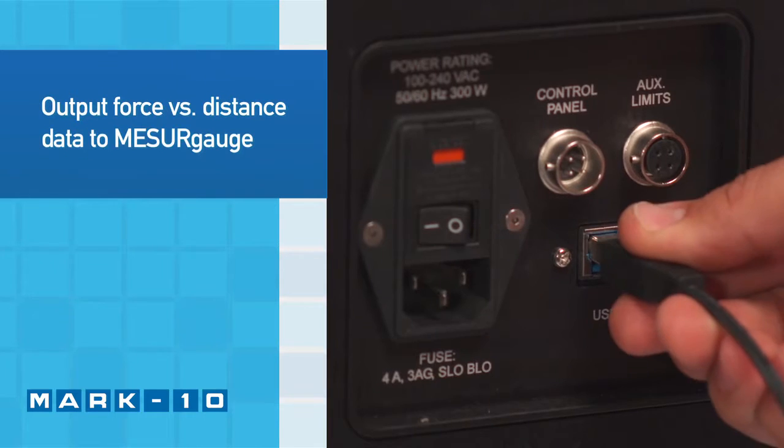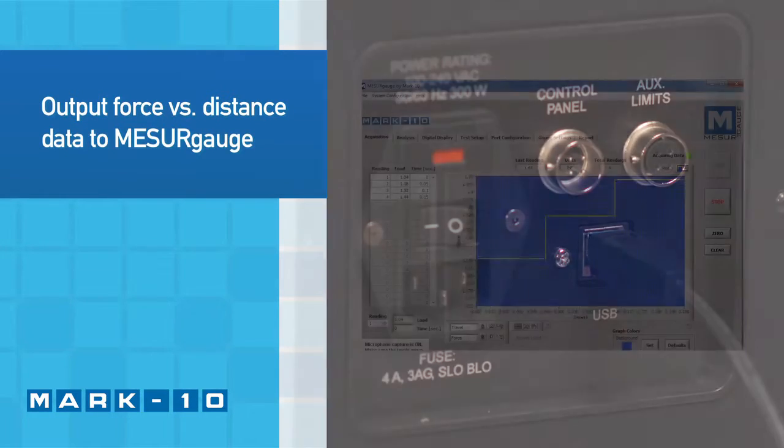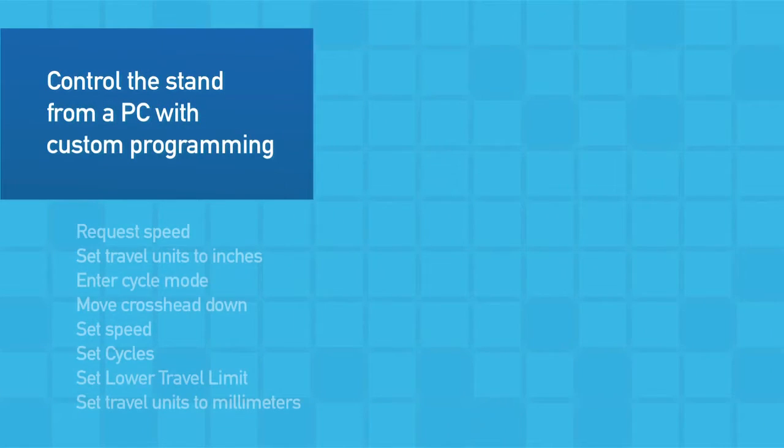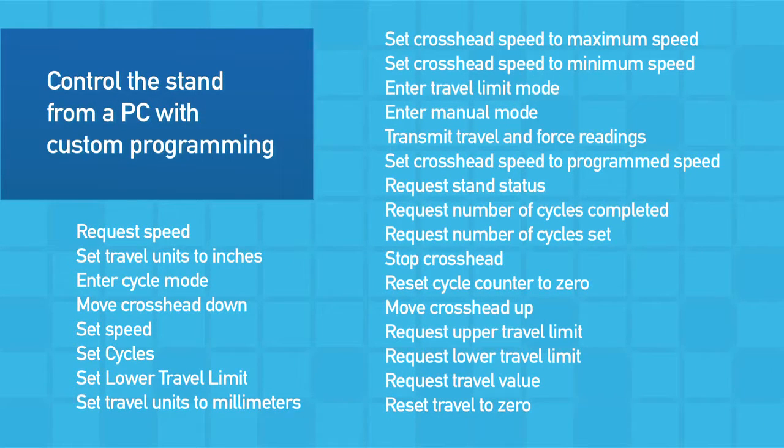Force and distance data can be output to a PC via USB for graphing and reporting. Custom applications can also be developed utilizing the ASCII command set.